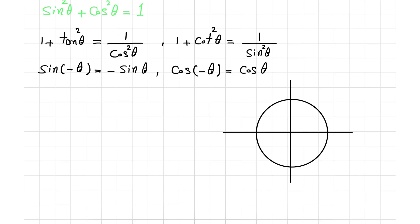Let's assume this angle is theta. This is the cosine axis and this is the sine axis.